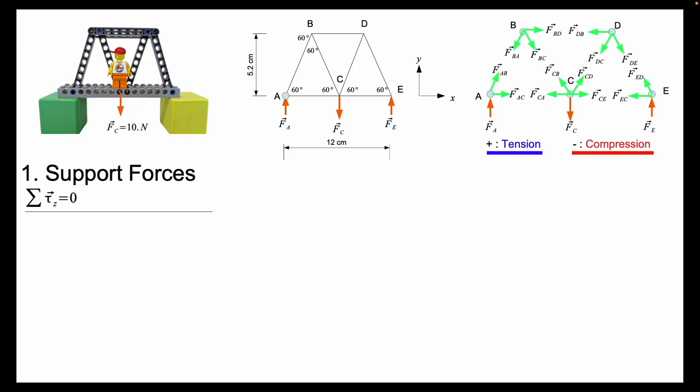I put my pivot on point A and I can calculate the minus Fc times the distance of 6 centimeters because I'm going clockwise and plus the force applied on E times the 12 centimeters must give me zero.